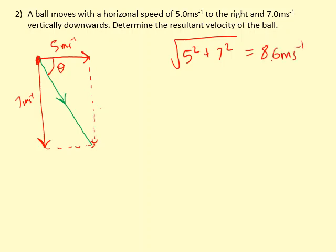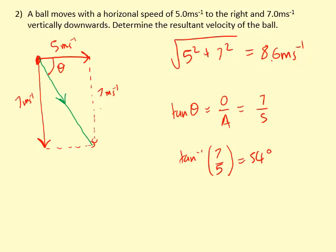To find the angle, we again have the opposite and adjacent. In this case, the opposite is 7 (opposite the angle) and the adjacent is 5. So tan inverse of 7 over 5 equals 54 degrees. This is below the horizontal.